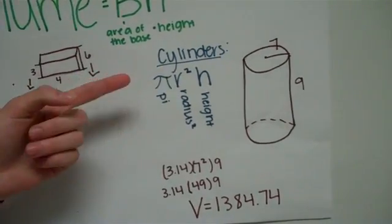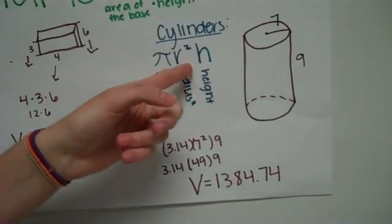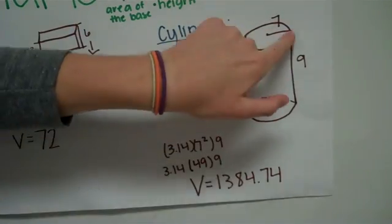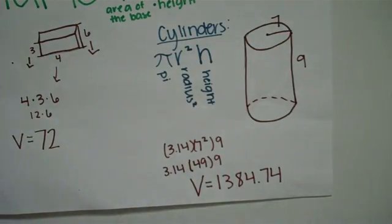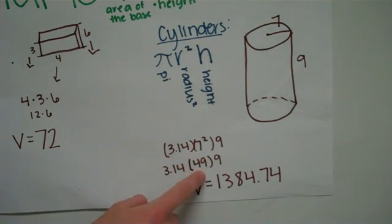For cylinders, you have pi times radius squared times height. So for this one, the radius is 7, you're going to make sure to square that first, so you have 49.